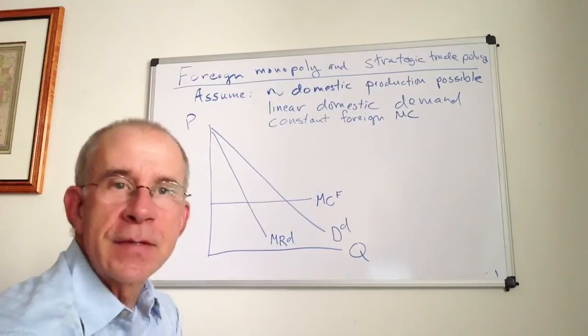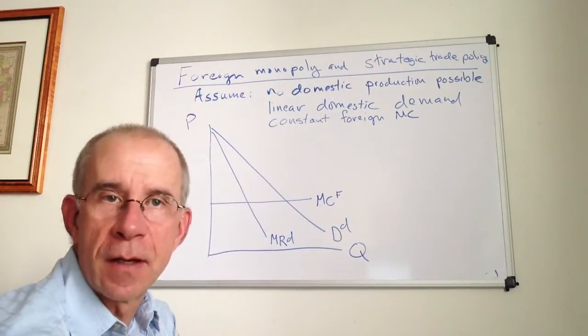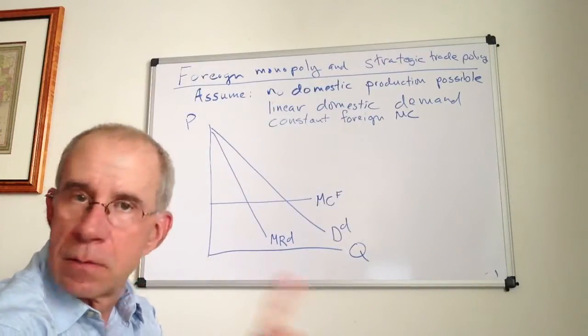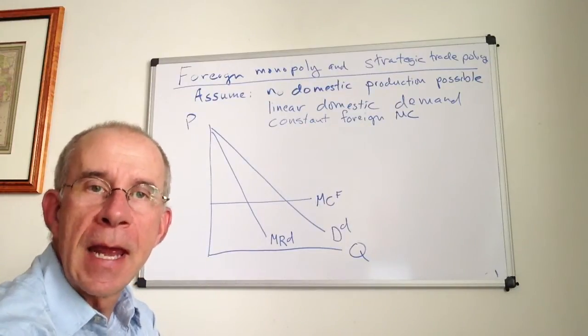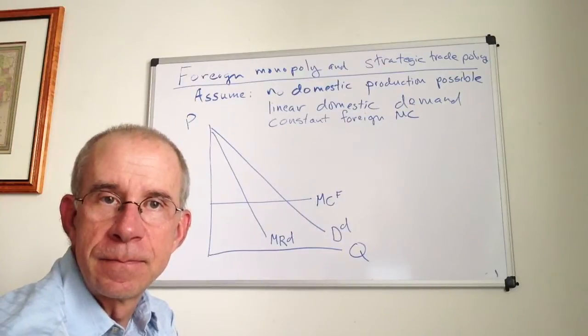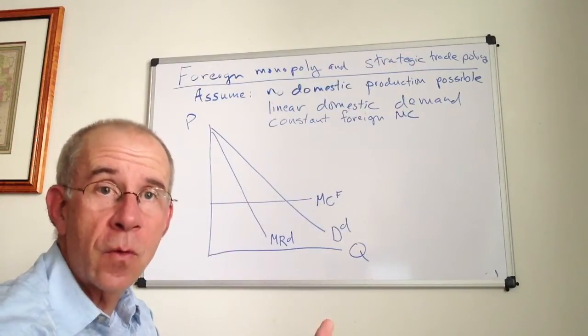So we're going to think of a situation, say like a pharmaceutical product, where the only source of this product is from a foreign company. A single foreign company makes this, let's keep it simple, and there is no possibility of domestic firms producing this product. So the only place you can get it from is a single foreign firm.